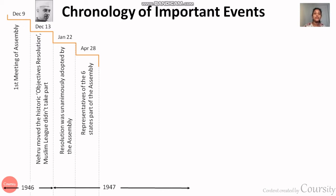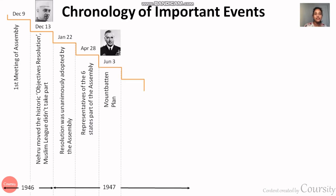The representative of 11 states participated in the assembly. Then on 3rd June, the Mountbatten Plan came about, which talked about the partition of India.